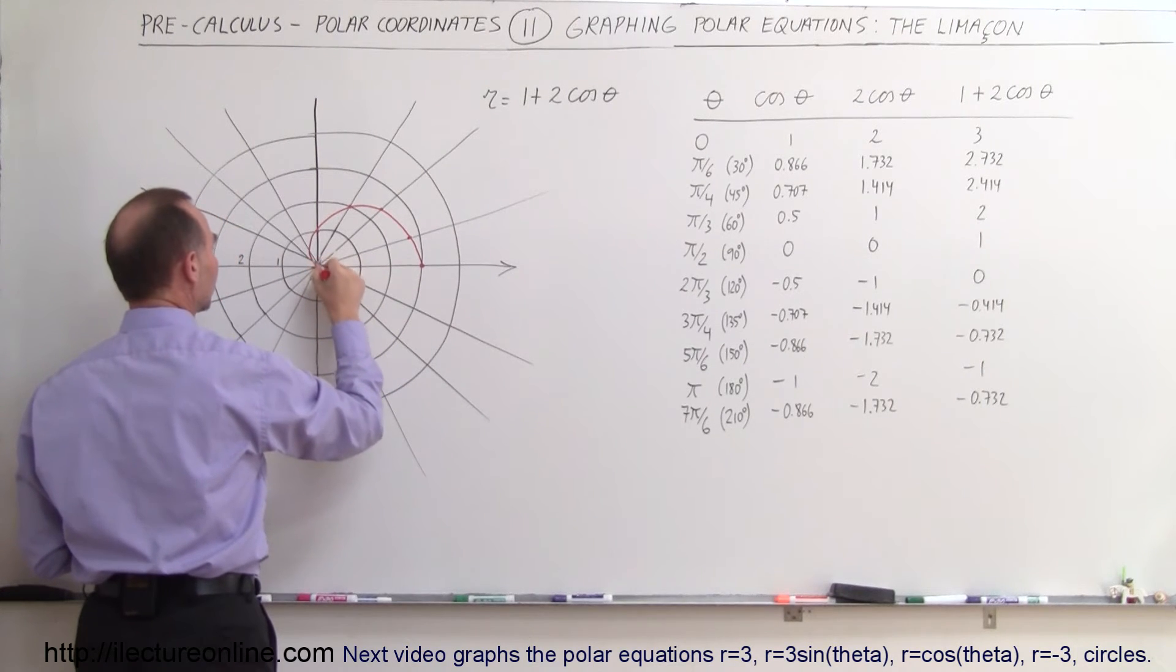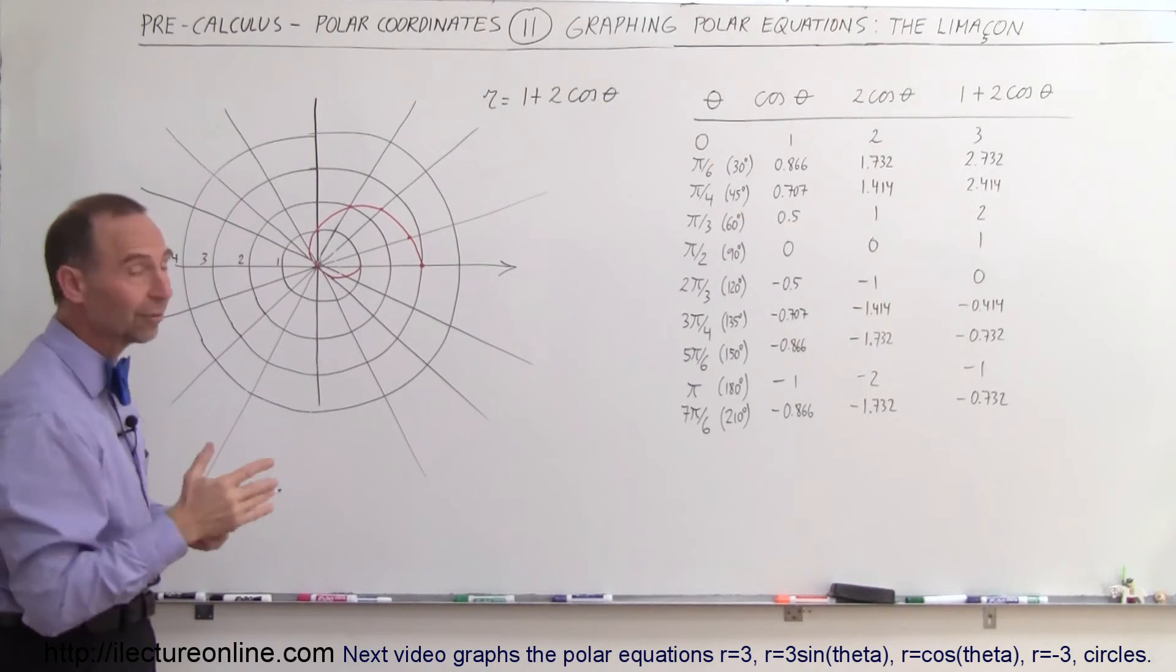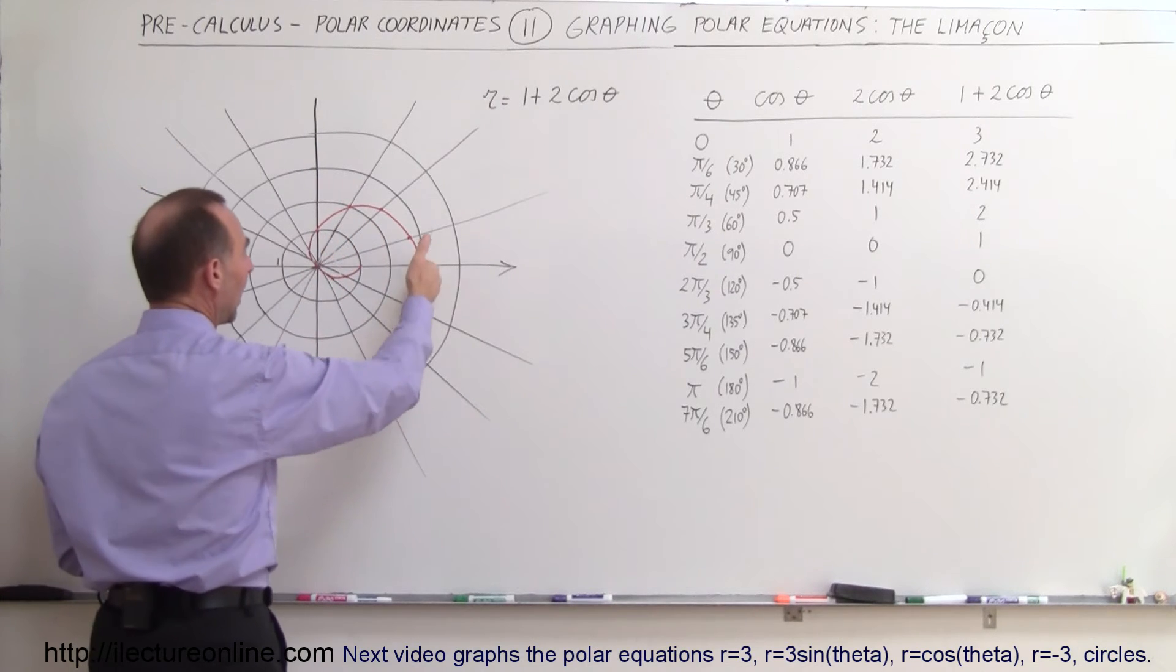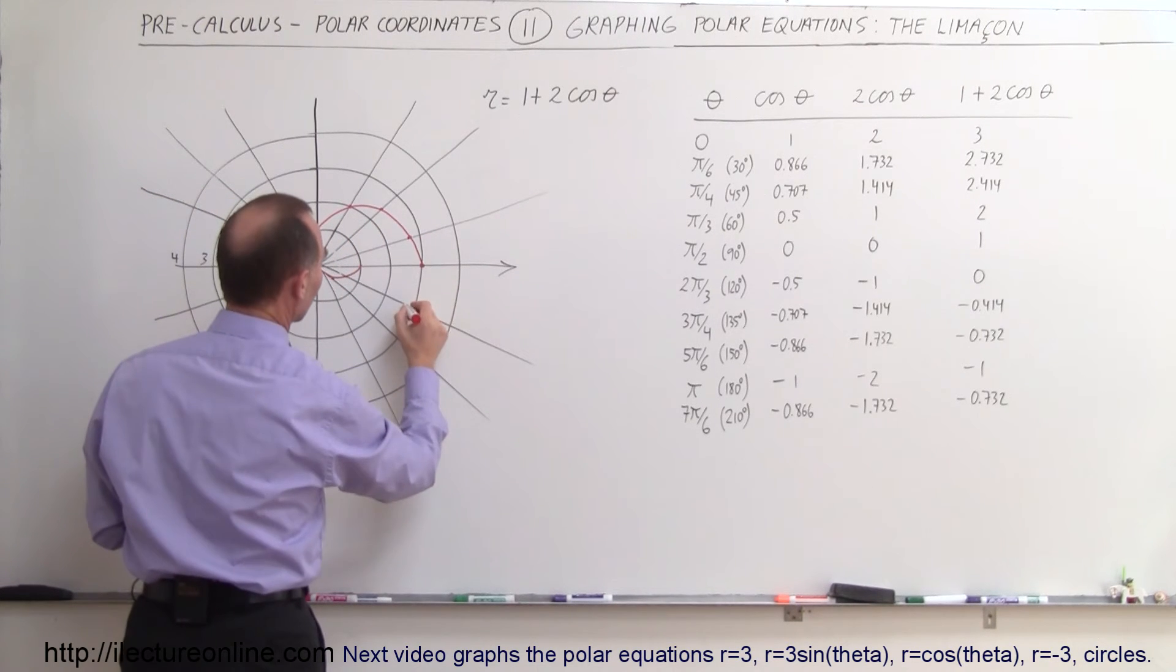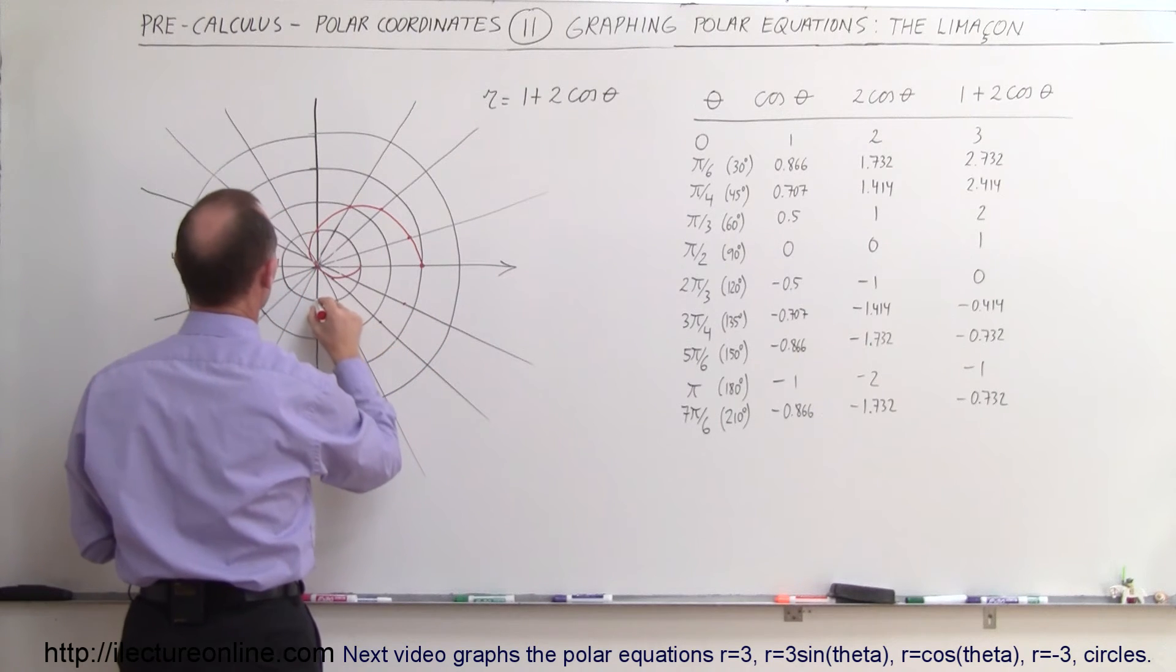We continue that curve this way. You can see that it looks like that. So that's half of the Limaçon. If we then continue, you can see that this will continue like this. And we could probably put in some of these other points. We could put in this point right there, this point right there, this point right there, this point right there.